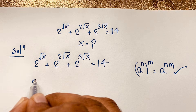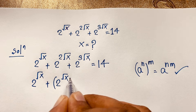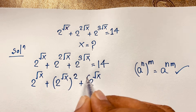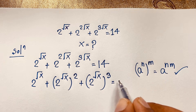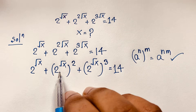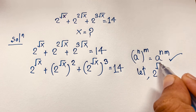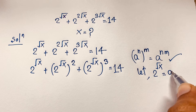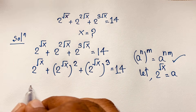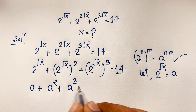...this expression becomes: 2 to the power square root x, plus 2 to the power square root x bracket squared, plus 2 to the power square root x bracket cubed, equals 14. Now you can see all three terms share the base 2 to the power square root x, so let 2 to the power square root x equal a. Substituting, we get: a plus a squared plus a cubed equals 14.